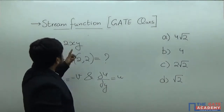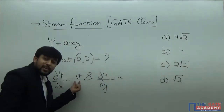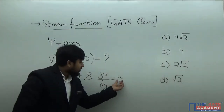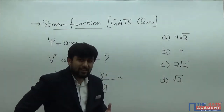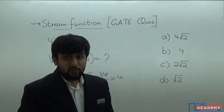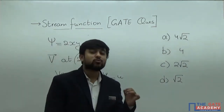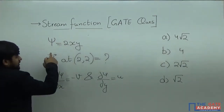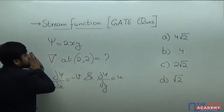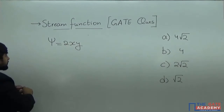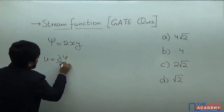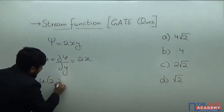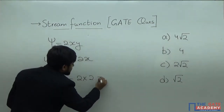Psi equal to 2xy is already given to us. From this we can derive the velocity components. u is equal to del psi by del y, which equals 2x. At point (2,2), u is equal to 2 into x which is 2, that is 4 meters per second. So the x-component of velocity is 4 meters per second.